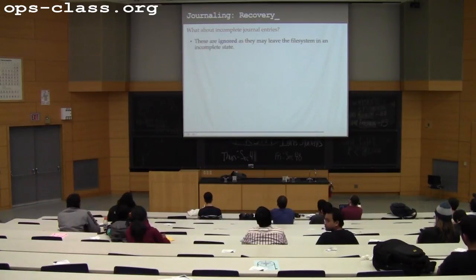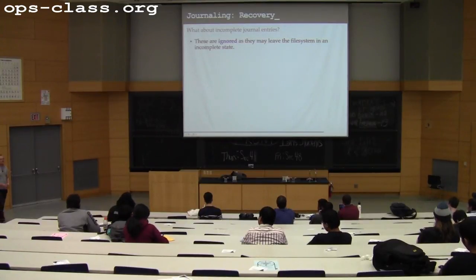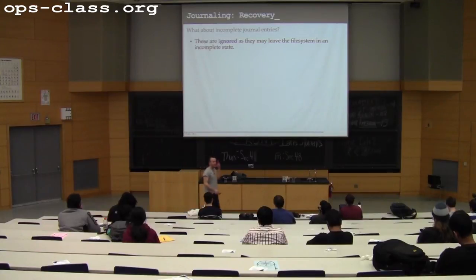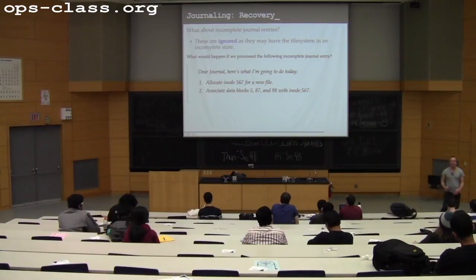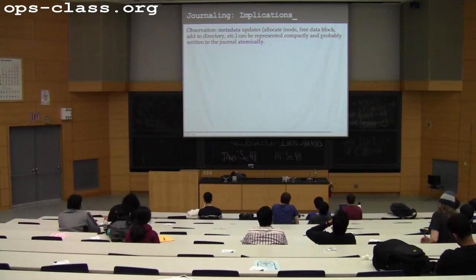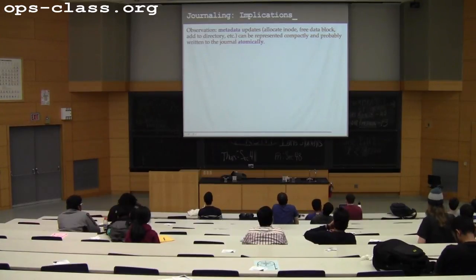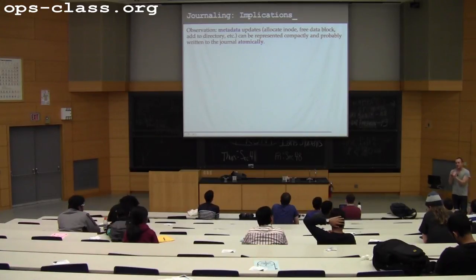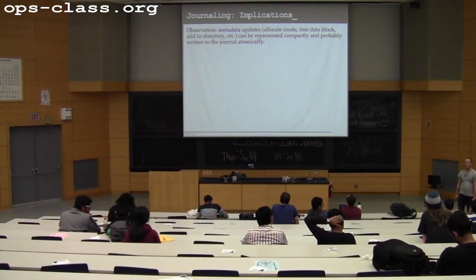The nice thing about journal entries is they fit inside a data block, so I can write them atomically. If a journal entry spans two data blocks and is incomplete, I have to ignore it because I don't have enough information to know what the whole operation was. For small operations like metadata updates, I can represent them inside a single data block. For data blocks, there are two solutions: actually write them into the journal — which requires writing every data block twice — or don't ever write data blocks to the journal, which means after recovery the file system data structures may be up to date but the contents of files may not have been perfectly preserved.